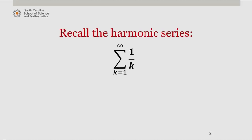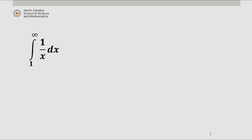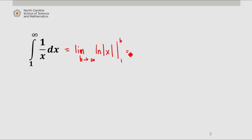We'll begin with the harmonic series and the associated integral from 1 to infinity of 1 over x dx. In evaluating this integral, we find that it's equal to the limit as b approaches infinity of the natural log of absolute value of x evaluated from 1 to b, which is the limit as b approaches infinity of natural log of absolute value of b minus natural log of 1.